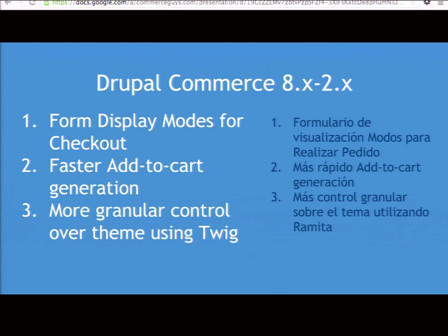Another improvement: right now, to get the Add to Cart button to work, it has to load every single product from the database connected to that node — which isn't a big deal if you're selling a shirt in three colors and three sizes, but it's a big deal if you're selling an event with 16 different locations, 16 different languages, and 16 different time slots. That could mean 100,000 products loading on every page load. We don't have to do that anymore with Commerce 2X. Finally, we'll have a lot more control over the way things look — from the product level all the way up to the catalog level — thanks to innovations in Drupal core with Twig.